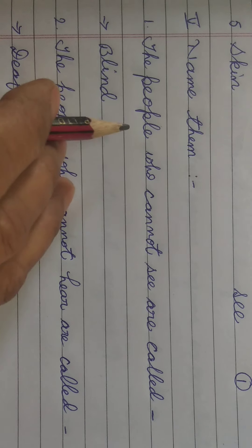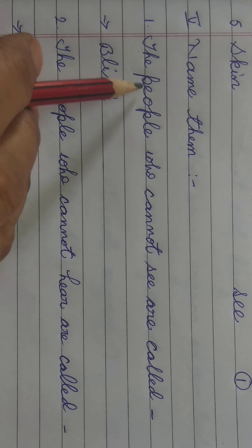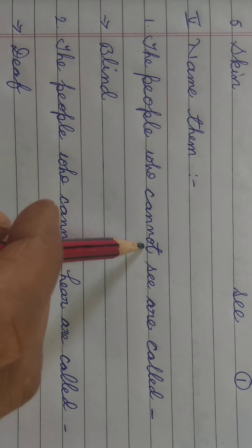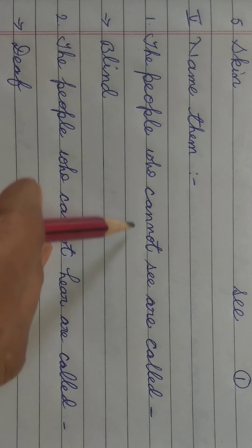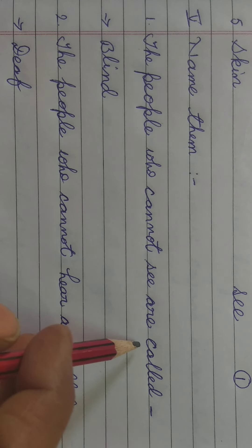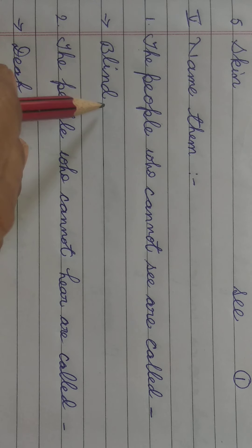Here some statements are given. We have to write the answers for them. First one, the people who cannot see are called. Jho people nahi dekh sakte hain, unhe kya kehte hain? B-L-I-N-D blind. Blind means the people who cannot see.